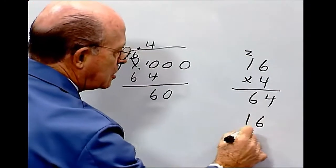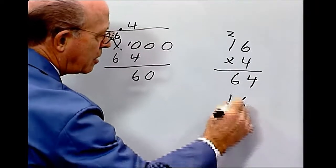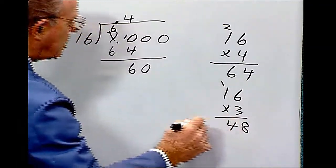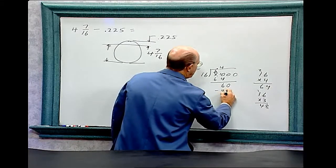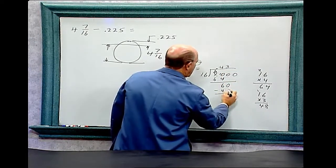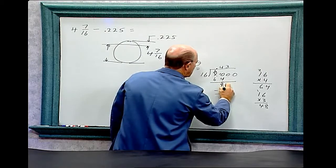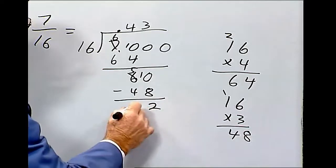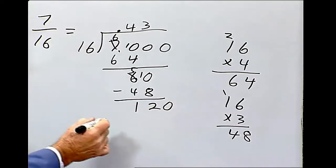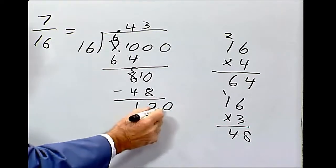And how many times does 16 go into 60? That'd be 3 times. 16 times 3 is 48. So minus 48. Bring down the 0.